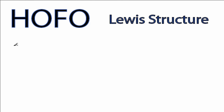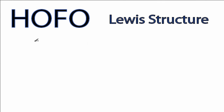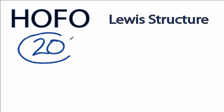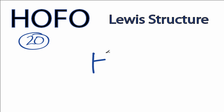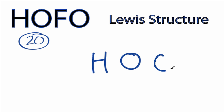This is the Lewis structure for HOFO. For HOFO, we have 20 valence electrons. Hydrogens go on the outside, and then oxygen is less electronegative than fluorine, so we'll put the oxygens on the inside of this structure.